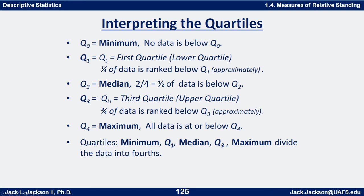Q one, also sometimes known as Q-L, is the first quartile or lower quartile, so that one fourth of the data is ranked below Q one, at least approximately. And Q three, or Q upper, the upper quartile or third quartile, is the number so that three fourths of the data is ranked below Q three, at least approximately. The word 'approximately' is used because, just like the median, exactness depends on whether the data count is even or odd.